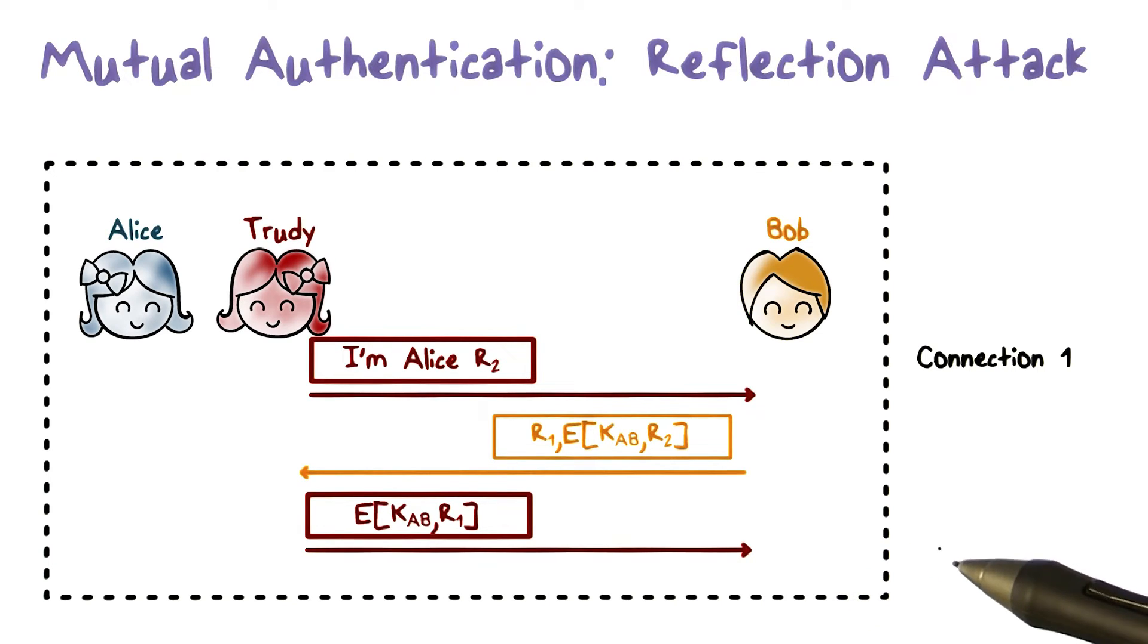That is, at this point, the first connection successfully concludes and Trudy has successfully impersonated Alice. This is called a reflection attack because Trudy simply sends back to Bob what Bob has sent her from another connection.